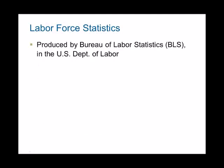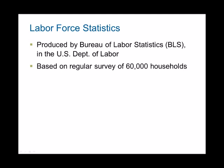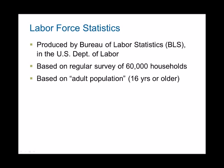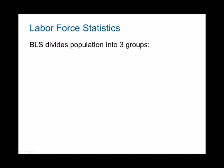Every month the Bureau of Labor Statistics, which is run by the US Department of Labor, sends out a survey. It surveys about 60,000 households in the US. They ask anyone who is about the age of 16 or older whether they're working, or if they're not working, what they're doing — whether they're looking for a job or not. After the survey comes in, done every month, the BLS divides the population into three groups.